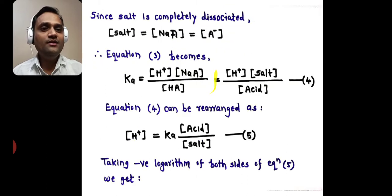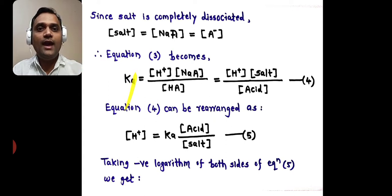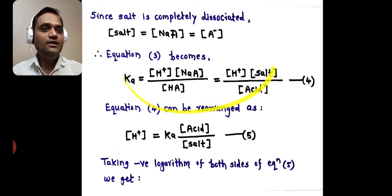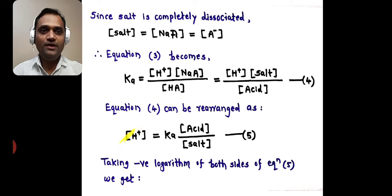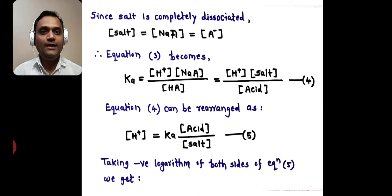Now, Ka = [H⁺] × [salt] / [acid], which is equation 4. By rearranging equation 4 for H⁺, we get: [H⁺] = Ka × [acid] / [salt]. When we write it for H⁺, the acid goes with Ka — so Ka times acid divided by salt. This is equation 5.